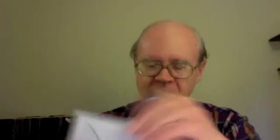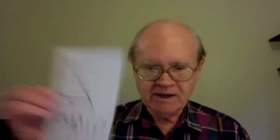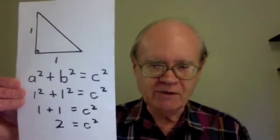We use the Pythagorean equation, which is a squared plus b squared equals c squared. The a and the b are the one and the one. So I substitute them in one squared, which means one times one is still one. And so I come up with one squared plus one squared equals c squared.